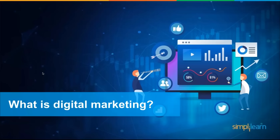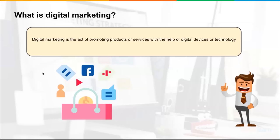Now that we've answered why digital marketing is important, let's talk about what digital marketing actually is. Digital marketing is the act of promoting a company's or individual's product or service with the help of a device or technology. When we talk about a device, we're talking about a laptop or mobile device; when we talk about technology, it could be an app, a cloud-based platform, or a piece of software. In a nutshell, you're using technology to promote your product or service.